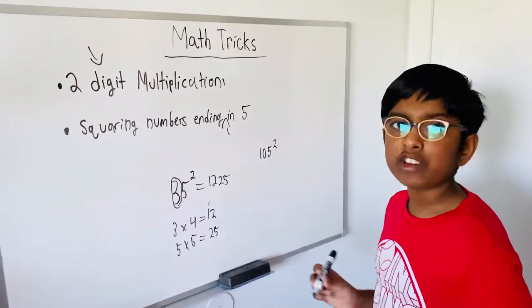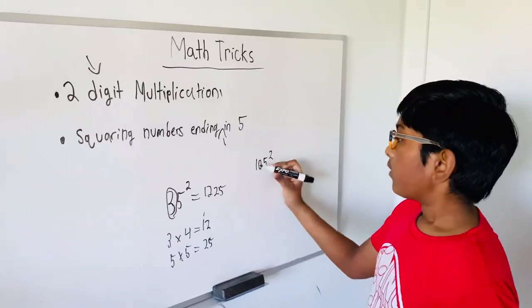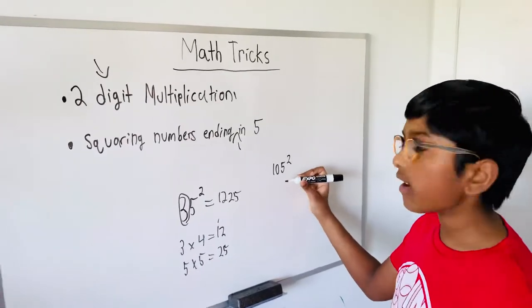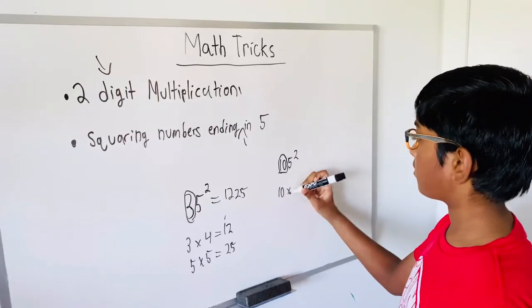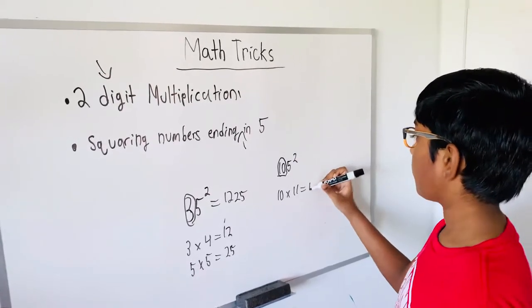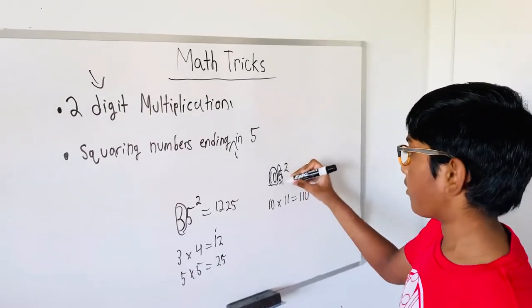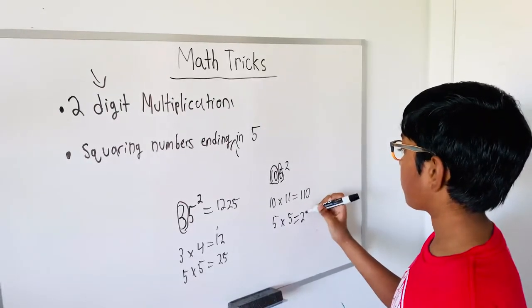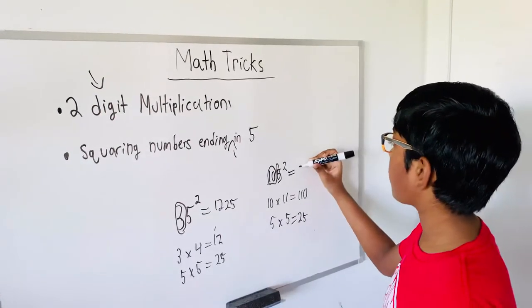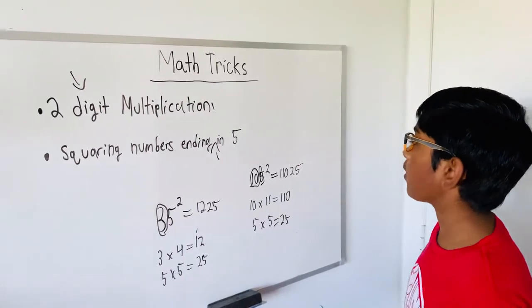So now let's do another one. Three digits. For three digits, you need to do this first. So 10 times 11, which is 110. Now let's do five. Five times five is 25. So 105² is 11025.